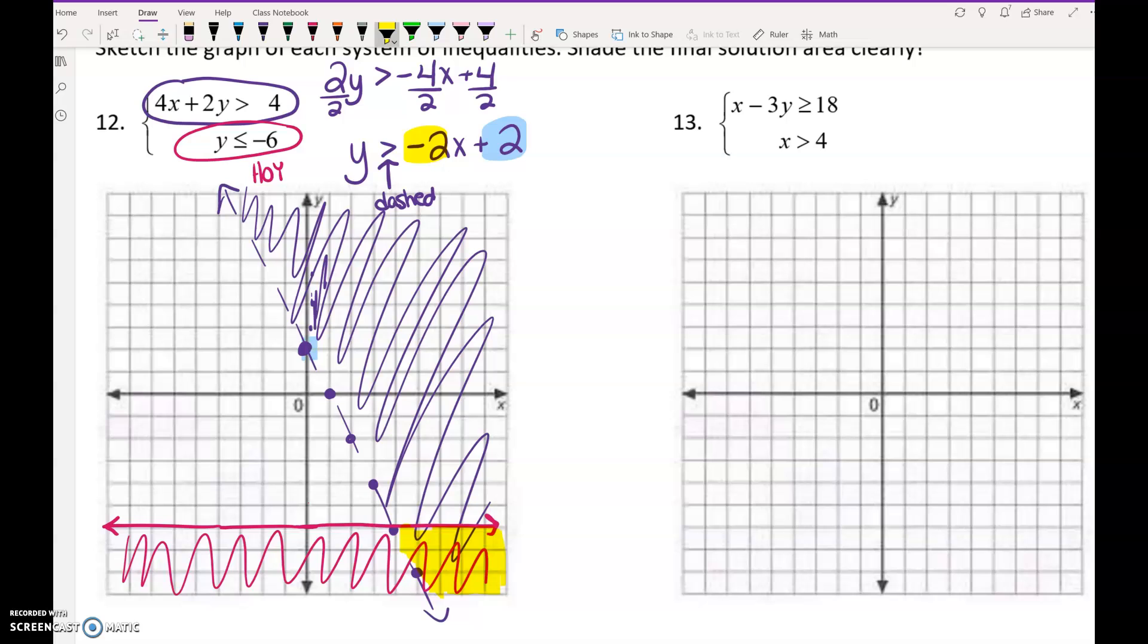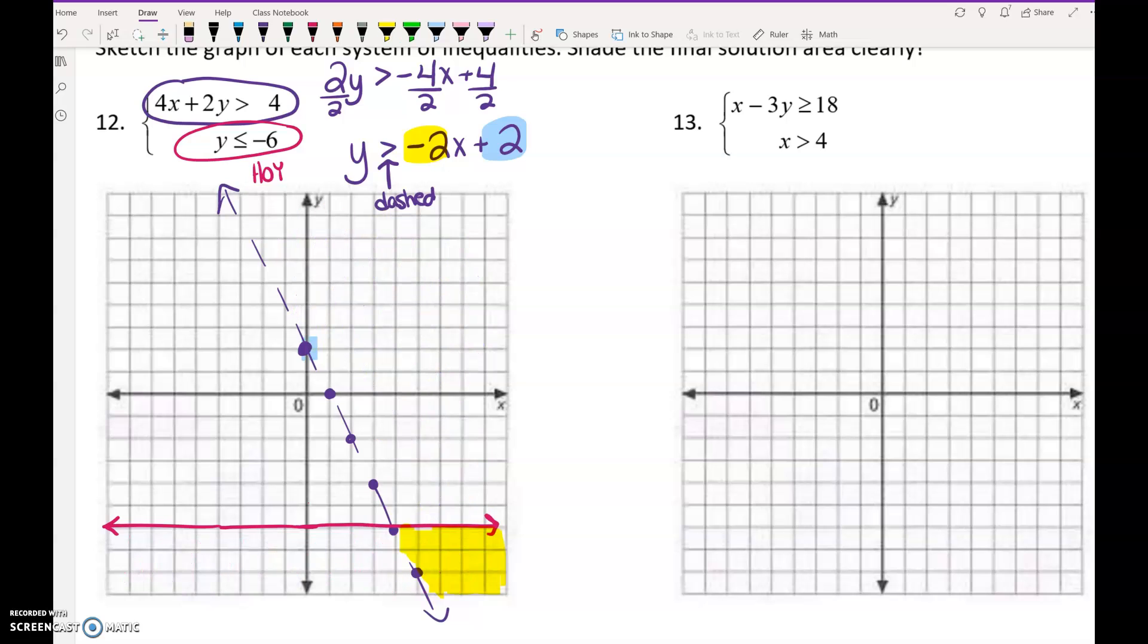And if you, like, I would really like it if you could try to make your shading as light as possible. And then really extra double shade the solution area so that I know that you know where the correct solution area is. So try to shade your stuff really light except for that final solution area. Get that shaded nice and dark.